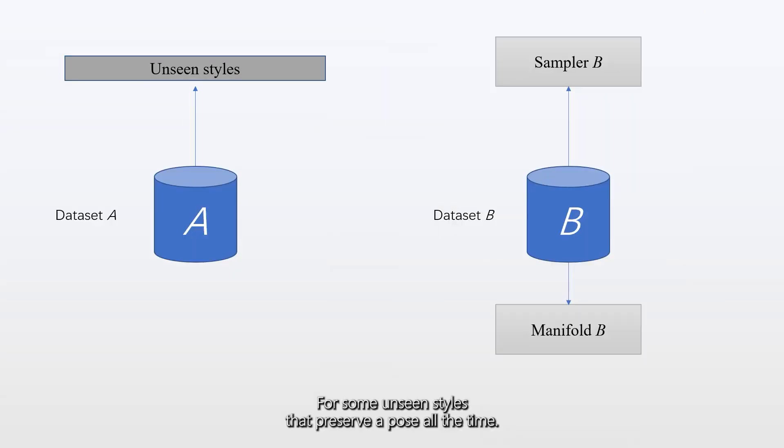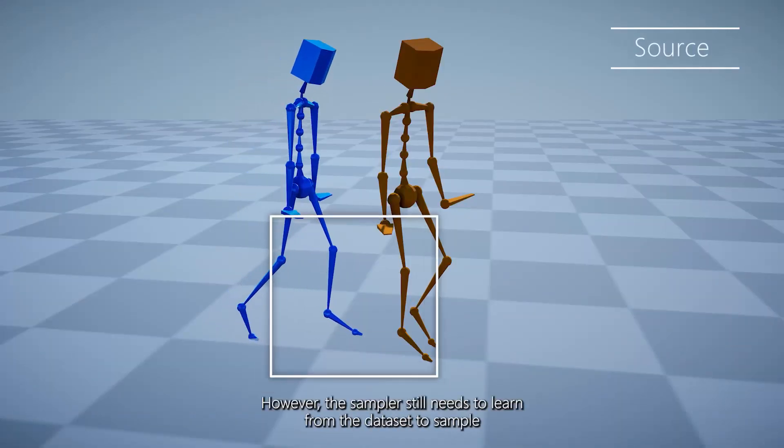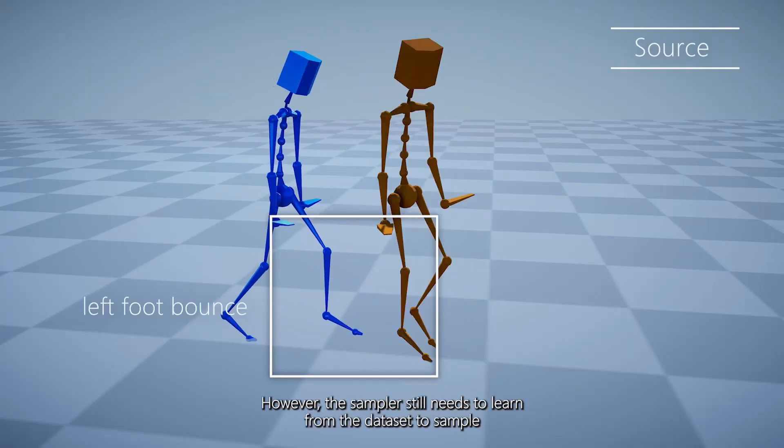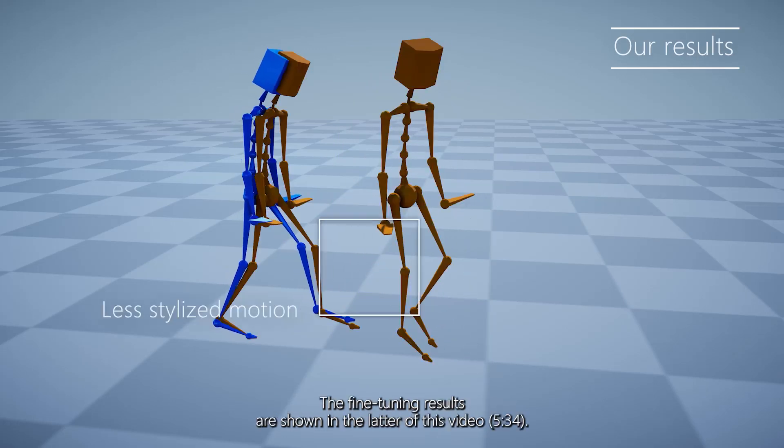For some unseen styles that preserve a pose all the time, the sampler does not change the posture during the transition, which keeps the style. However, the sampler still needs to learn from the dataset to sample a stylized motion to reach the target, which can be obtained by fine-tuning.